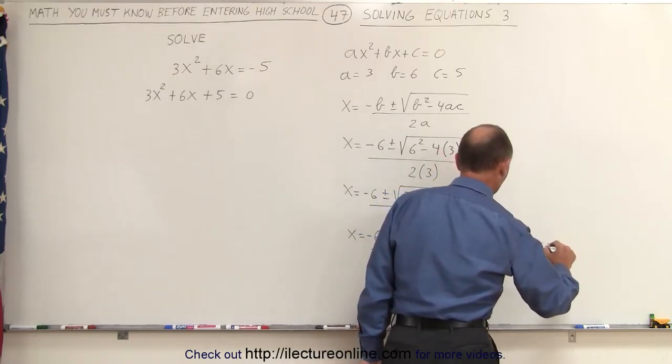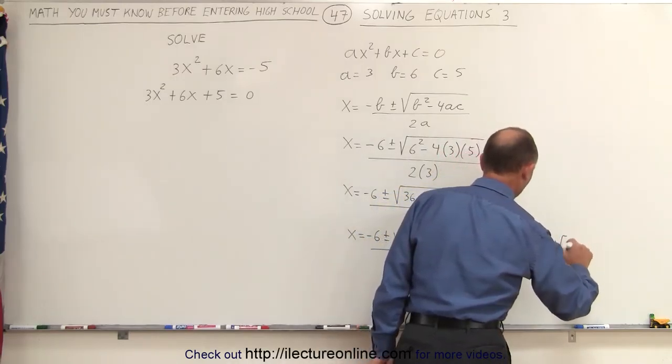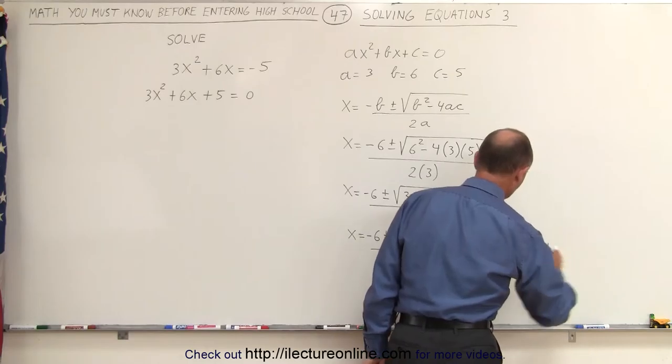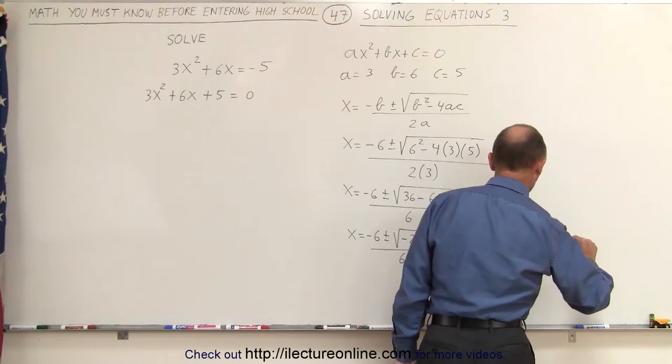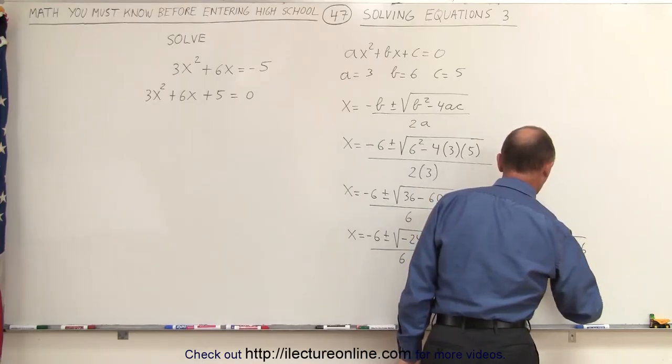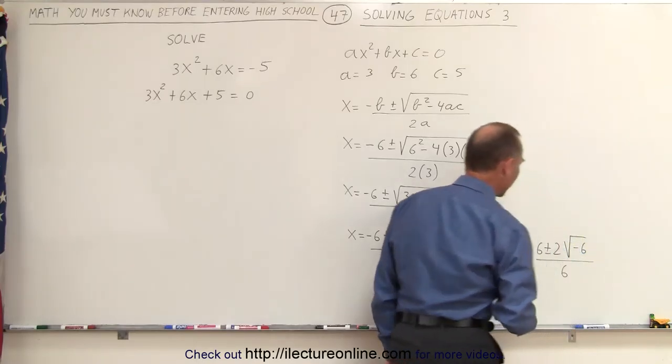This can now be written as -6 plus and minus the square root... a little too fast here because I'm taking the 4 out. 4 is 2², which means we can pull out a 2, times the square root of -6, all divided by 6.